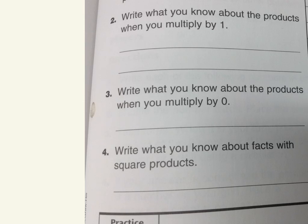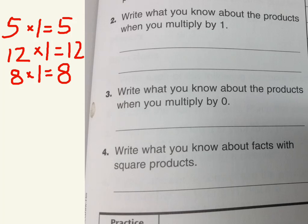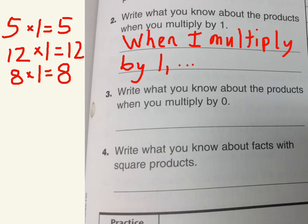After you do that, you'll have to do this second part: write what you know about the products when you multiply by 1. What's happening when we multiply by 1? One of the factors is 1. What's happening to the other factor? You can write it like this: When I multiply by 1, describe what happens.